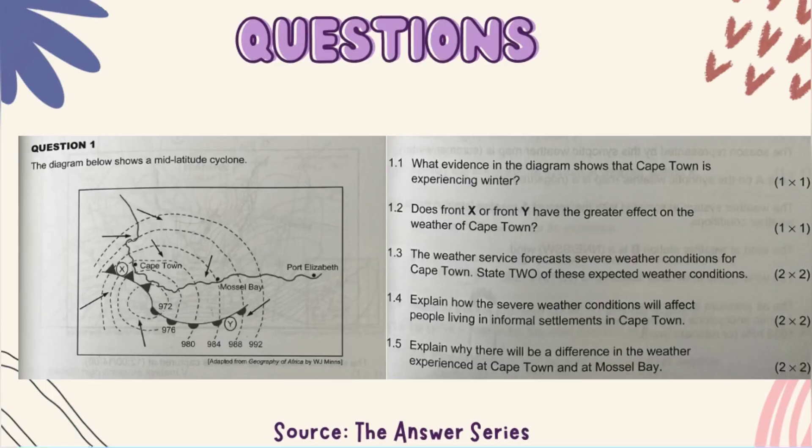Question 1.4: Explain how the severe weather conditions will affect people living in informal settlements in Cape Town. They like this question a lot. They always want to see how you will apply your knowledge. It's there in your textbooks, but always know how it actually affects people on a day-to-day basis.